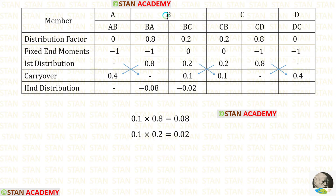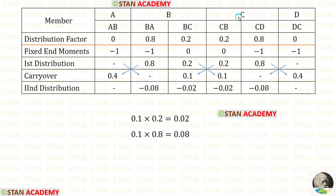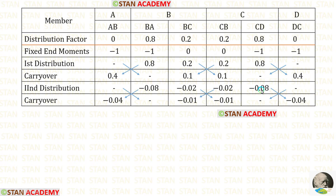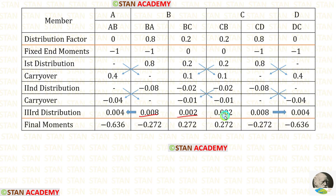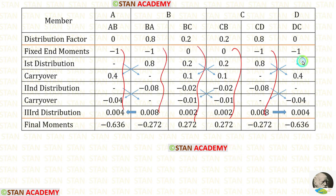Now let us do the second distribution in joint B — we multiply this value with the distribution factors. When we do that we are getting positive values, so we enter them as negative. Now let us do the second distribution in joint C — we multiply this value with the distribution factors. We are getting positive values, so we enter them as negative. Now let us do the carry over by dividing these values by 2 and entering the answers. I have done up to the third distribution and stopped because I am getting very small values. In the last distribution we give carry over to the fixed ends. Now let us add all values and find the final moments.